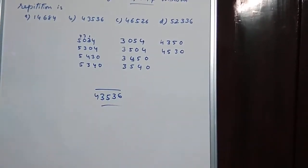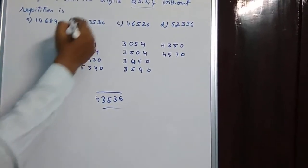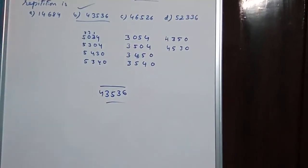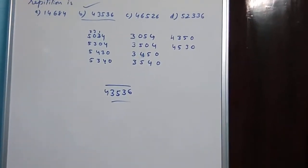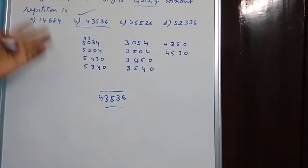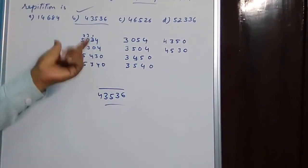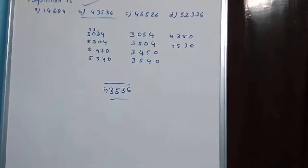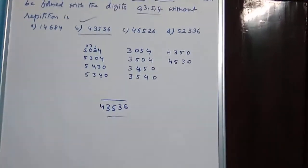Which are the options in the answer? 4, 3, 5, 6, 0 — this is the answer. Have a look — this is a very simple model. What we have to find: how many are there? We have to write each and every number.